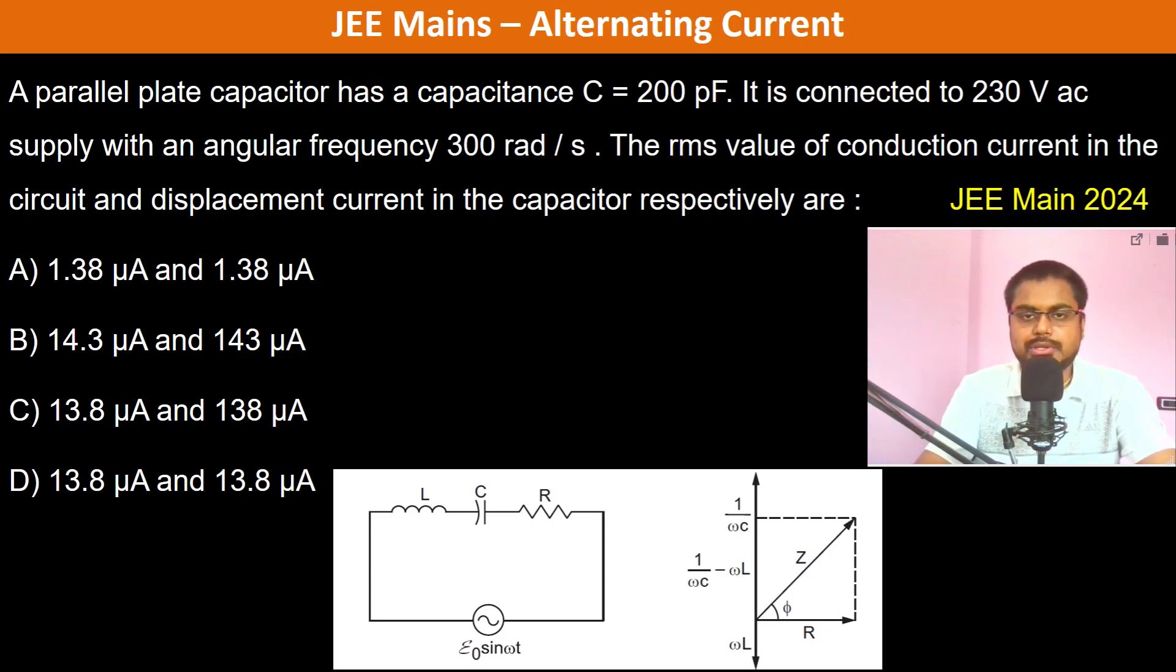A parallel plate capacitor has capacitance 200 picofarads. It is connected to 230 volt AC supply with an angular frequency of 300 radians per second. The RMS value of the conduction current in the circuit and displacement current in the capacitor.